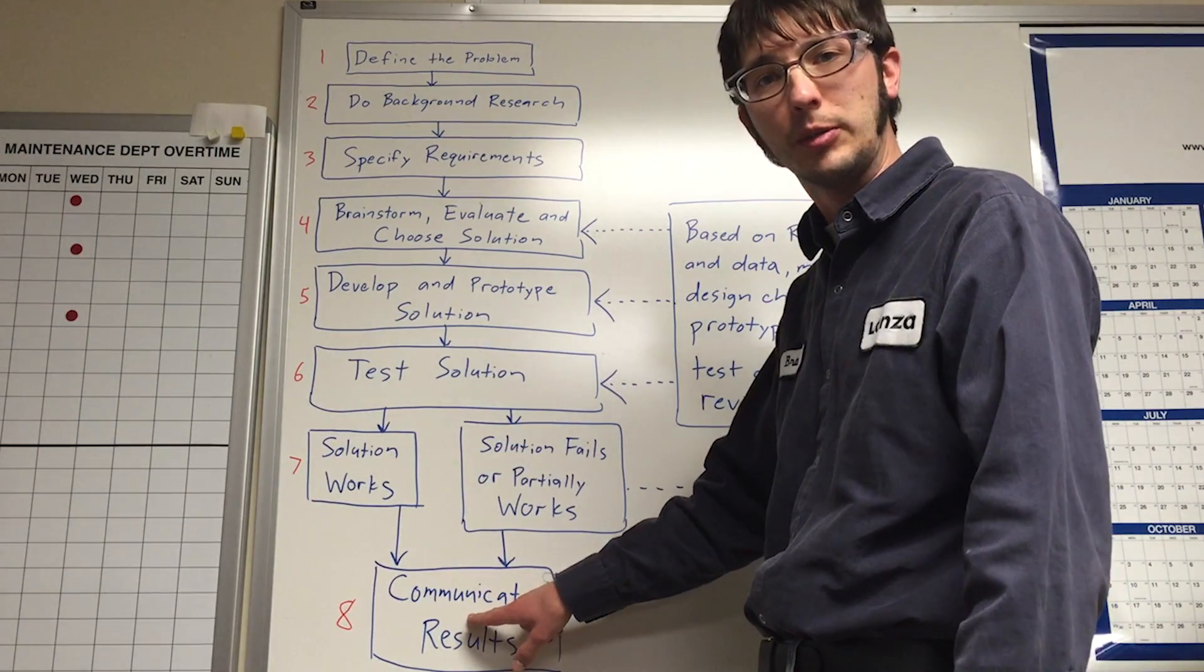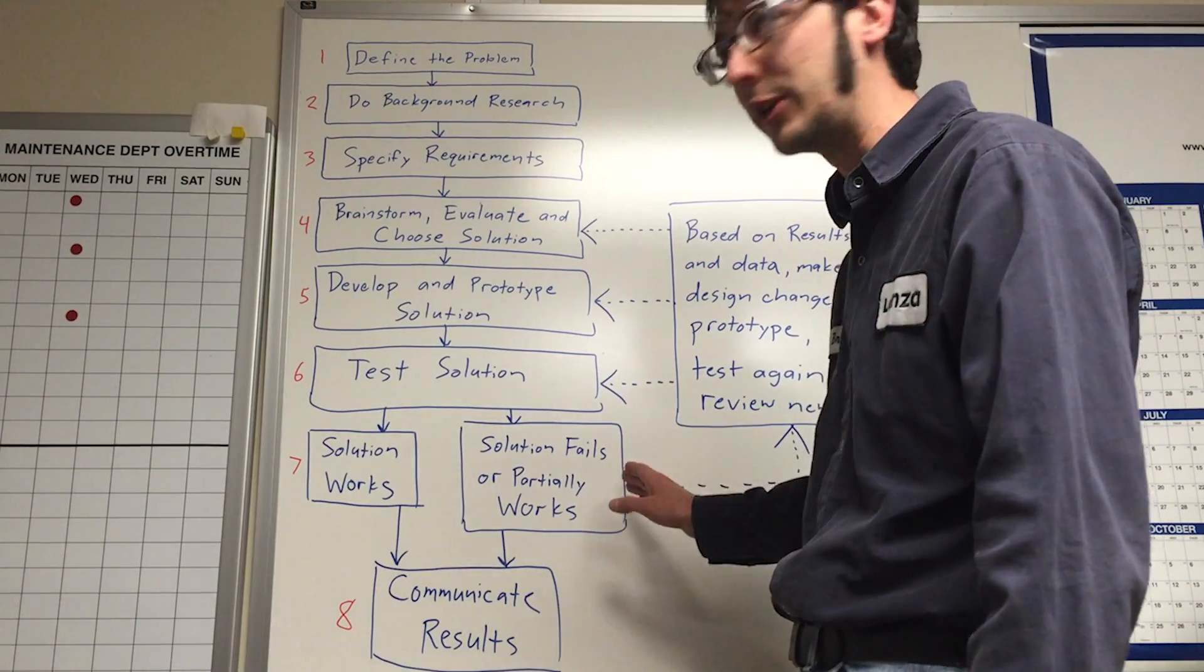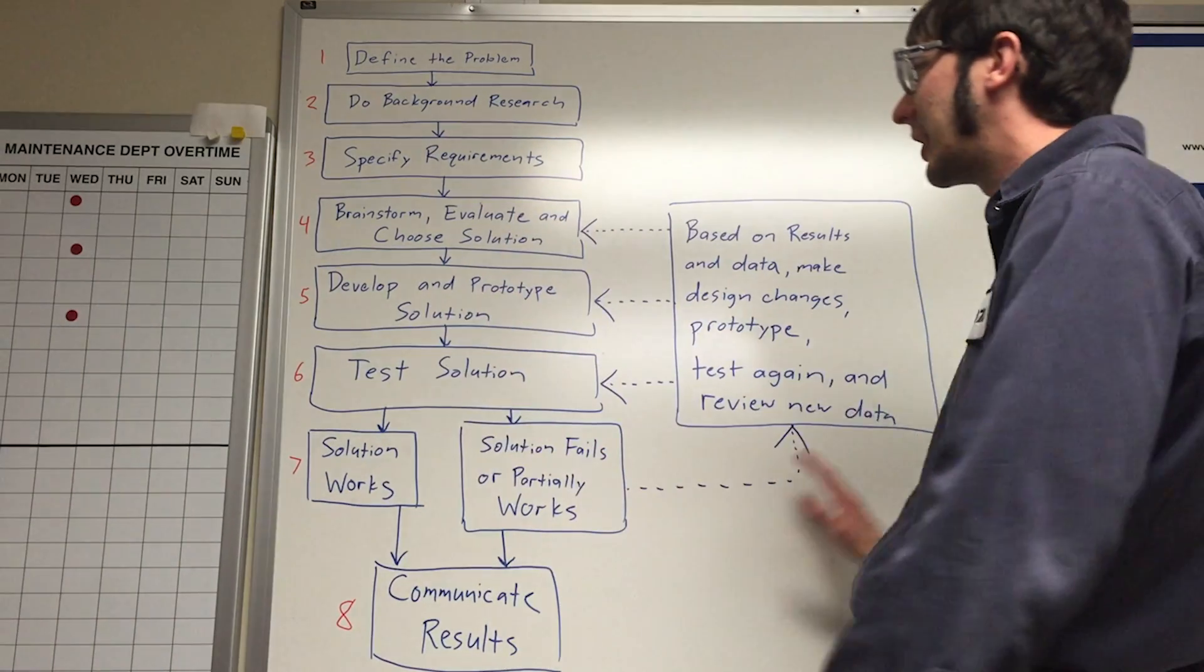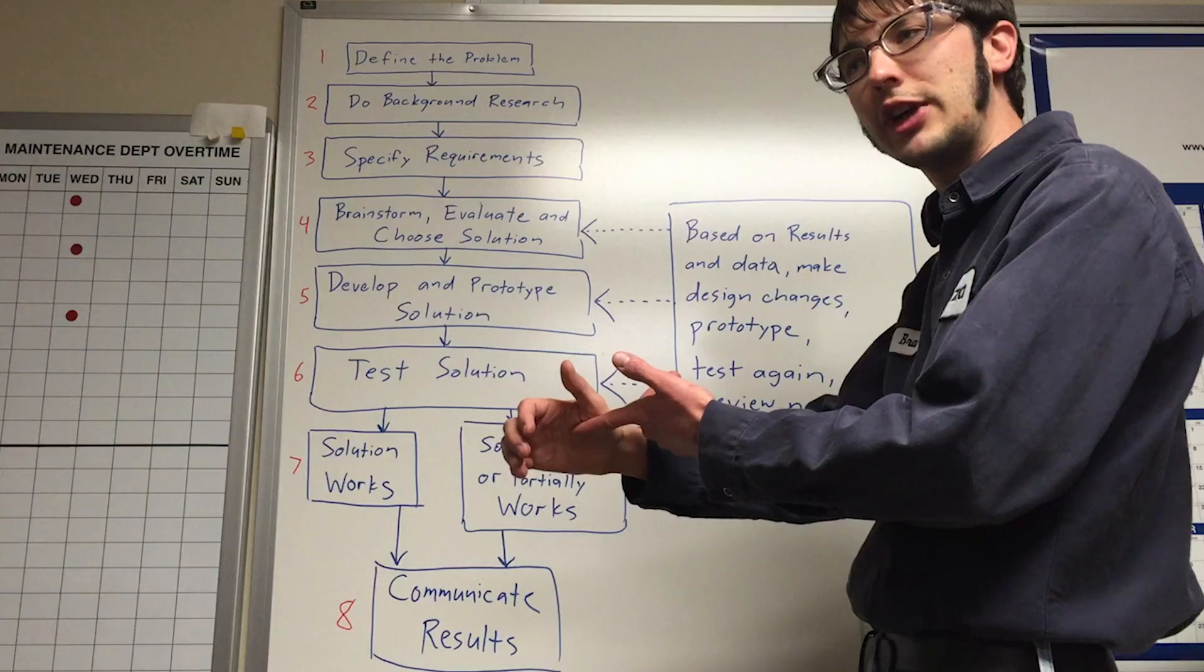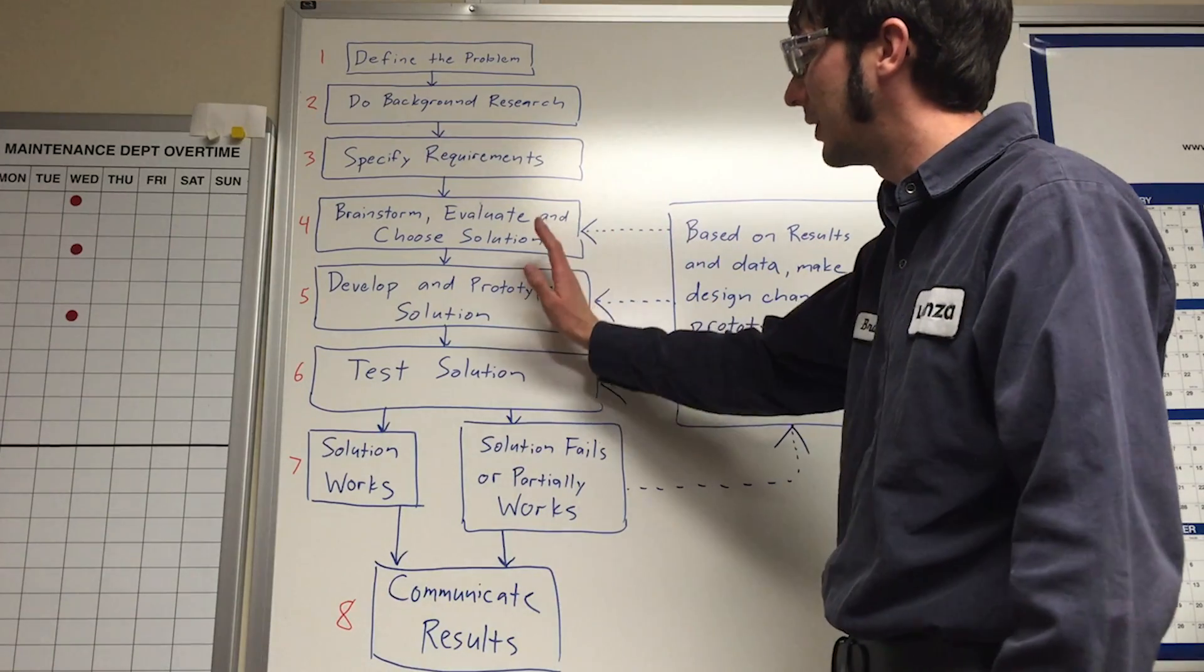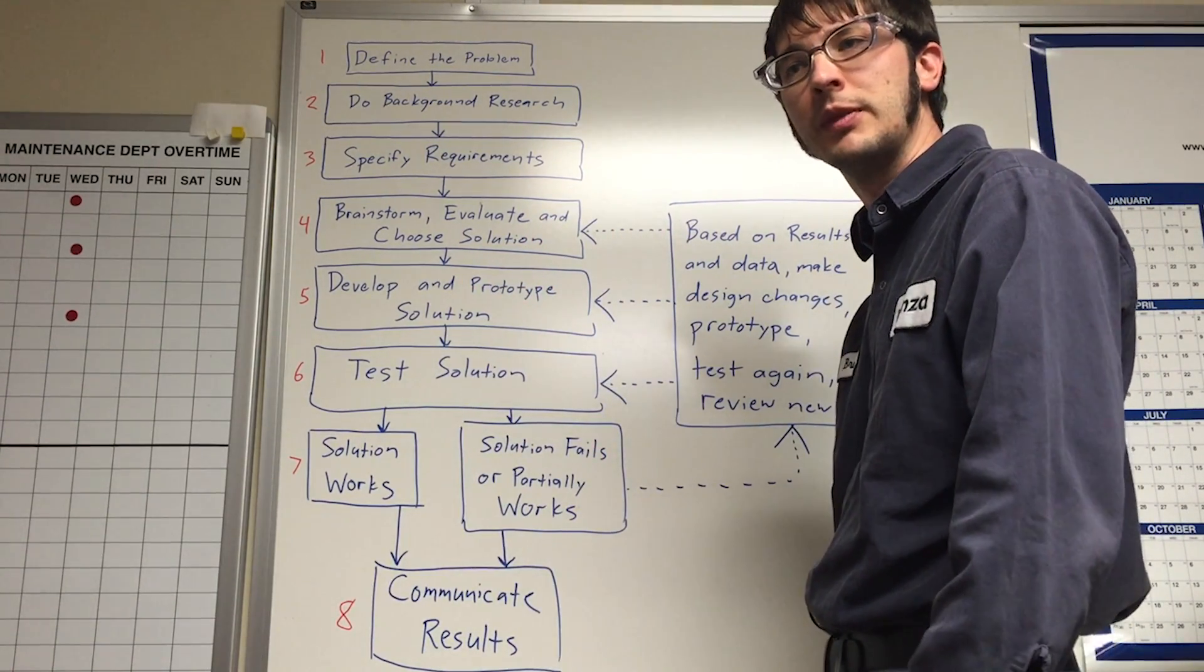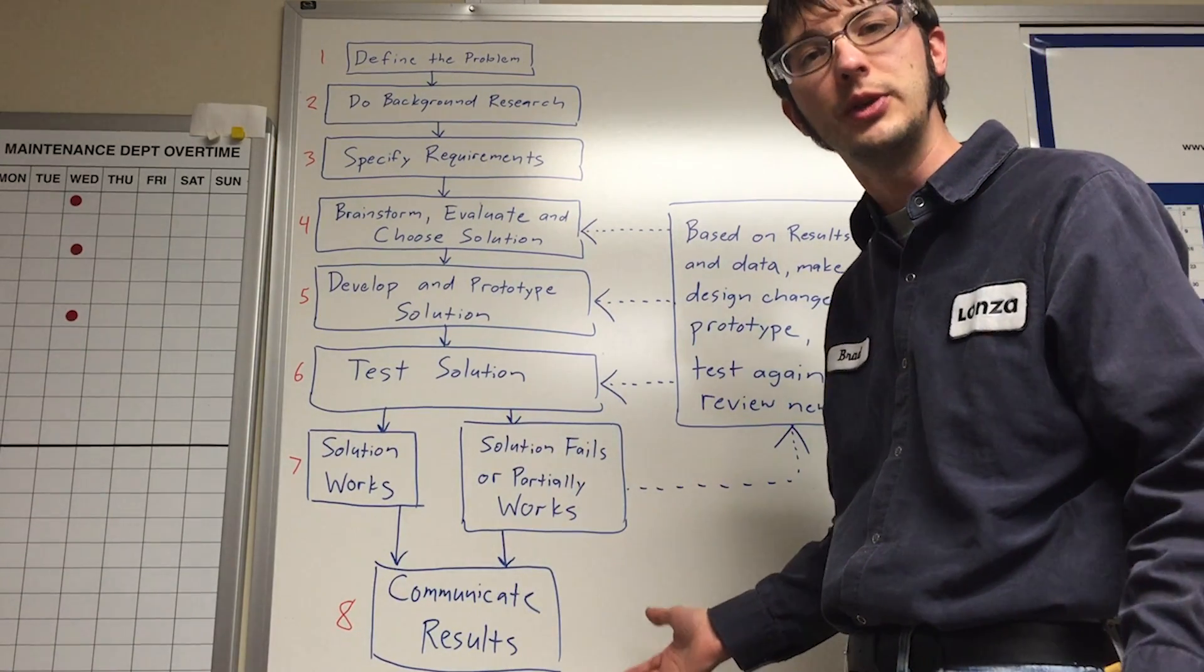Communicate the results to the pertinent plant members. If it doesn't work, if it fails completely or only partially works, it becomes an iterative exercise back to all these other steps to arrive at a different prototype, a different test, a different solution. So sometimes this can be circular for quite some time until the definite root cause is identified and you can move into a successful solution.